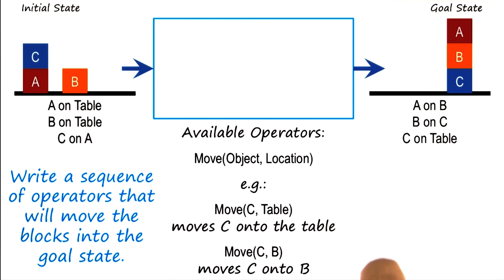Let us also suppose that we're given some operators in this world. These operators essentially move some object to some location. For example, we could move C to the table, or C onto B, or C onto A. Not all the operators may be applicable in the current state. C already is on A, but in principle, all of these operators are available.